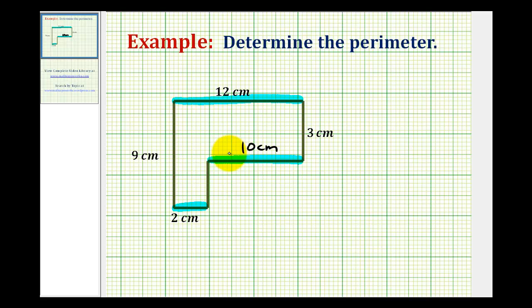And now we can use the same type of analysis to determine the length of this side here. If this side has a length of 9 centimeters, it must be the same length as the sum of the length of this missing side and this length here, which is 3 centimeters. So if this is 9 centimeters and this is 3 centimeters, this side here must have a length of 6 centimeters.